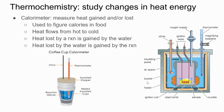We're going to look at thermochemistry, which is the study of changes in heat energy. Substances will absorb heat through temperature changes and we can calculate how much heat they can absorb before the temperature starts changing. We do this by use of a calorimeter, which measures how much heat was gained or lost by measuring the change in temperature.